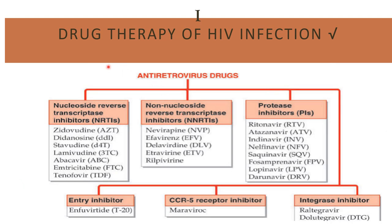Here are the various groups of antiretroviral drugs. First is the nucleoside reverse transcriptase inhibitors; second, non-nucleoside reverse transcriptase inhibitors; third, protease inhibitors; fourth, entry inhibitors; fifth, CCR5 receptor inhibitors; and sixth, integrase inhibitors. All these drugs act on various stages of the virus cycle.